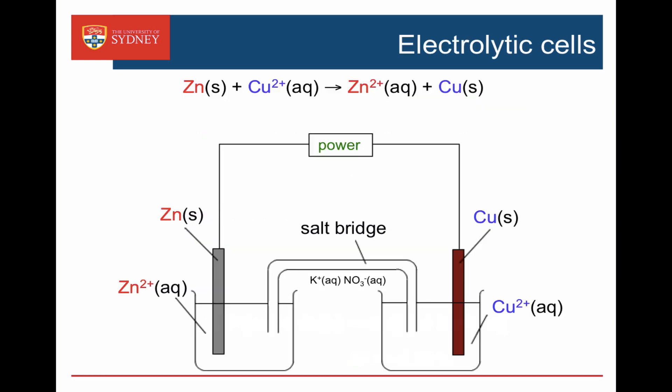Here's an electrolytic cell. We're providing power to make this reaction occur in the opposite direction to its normal behaviour — reacting zinc ions with copper metal to make zinc metal and copper ions. On the left-hand side we have zinc metal in contact with zinc ions, and on the right-hand side copper metal in contact with copper ions. We connect them with wire and provide power, with the circuit completed by a salt bridge. The normal cell potential is 1.1 volts, so we need to provide at least 1.1 volts to drive this reaction in reverse.